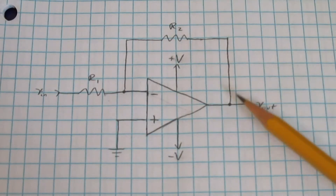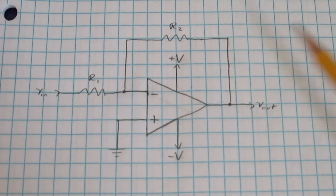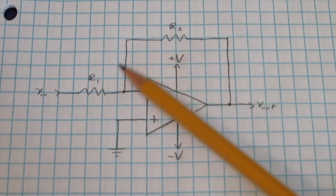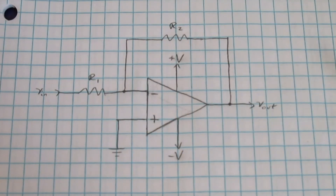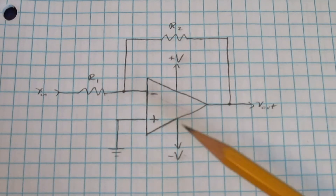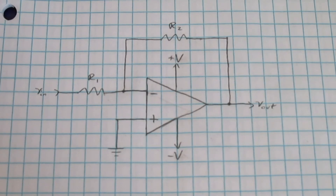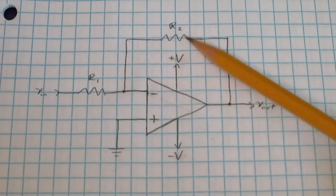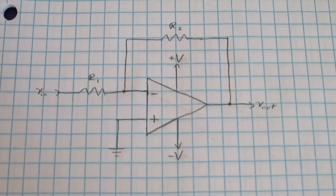Since the last op-amp video was about circuits with positive feedback, this one is going to be about op-amp circuits with negative feedback, which seems to be a more common use case for op-amps. In this video, I just want to talk about how op-amp circuits with negative feedback behave so that you can apply that to any other op-amp circuit with negative feedback.